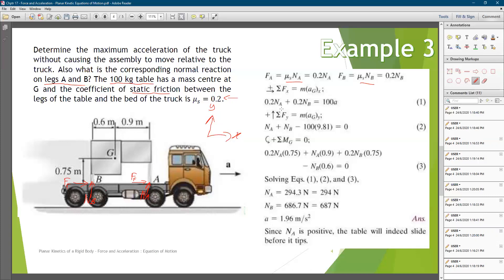As we can see here, we have the friction force at point A and the friction force at point B, and that is equal to the mass of the table times the acceleration. So now we have the first equation.